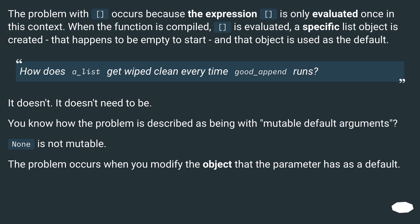The problem with `bad_append` occurs because the expression `[]` is only evaluated once in this context. When the function is compiled, `[]` is evaluated, a specific list object is created that happens to be empty to start, and that object is used as the default. How does `a_list` get wiped clean every time `good_append` runs? It doesn't. It doesn't need to be. You know how the problem is described as being with mutable default arguments — `None` is not mutable. The problem occurs when you modify the object that the parameter has as a default.